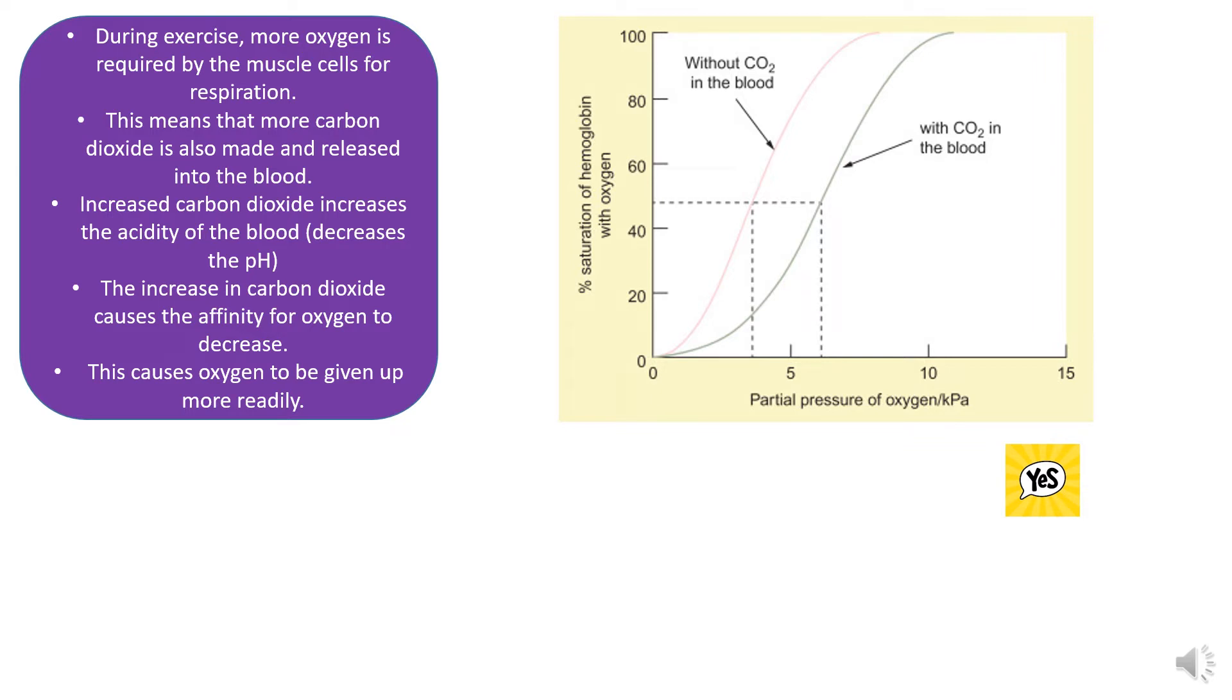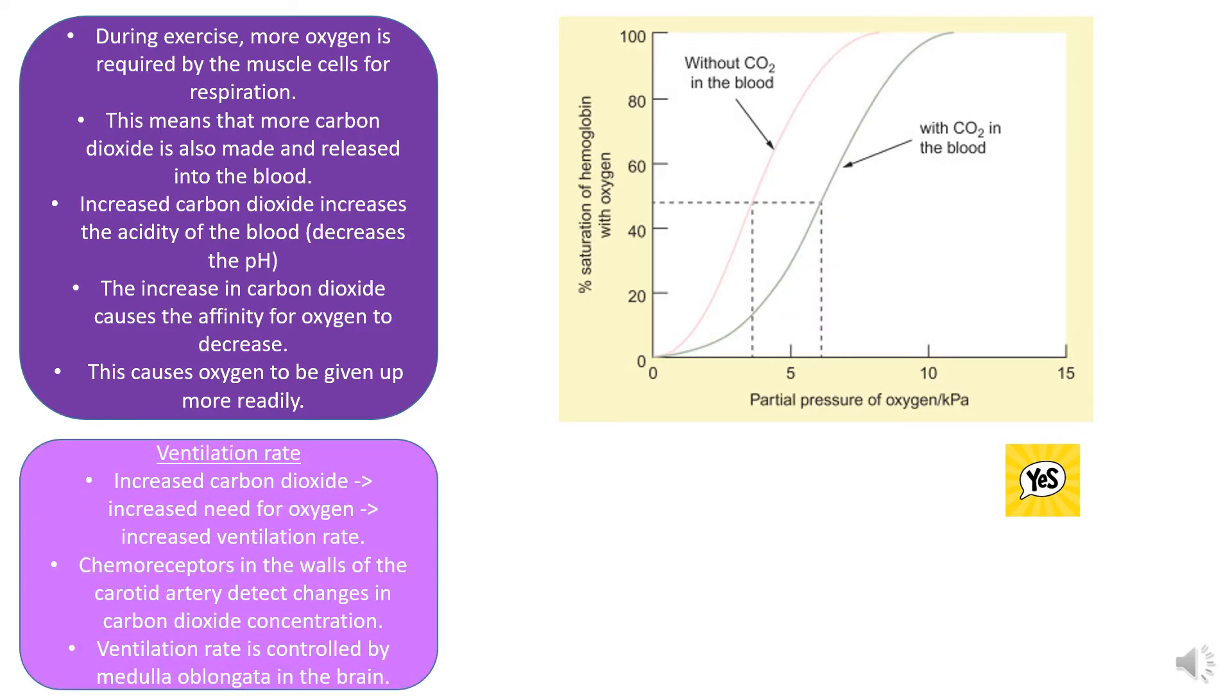If you imagine that you are a hemoglobin molecule in the lungs, there's a nice high affinity for oxygen because there's lots of oxygen. When the hemoglobin molecule gets to the muscle tissue, it recognizes that there's lots of carbon dioxide in the environment. If there's lots of carbon dioxide, the hemoglobin molecule thinks there must be lots of respiration occurring, therefore the cells must need more oxygen. So the affinity for oxygen decreases in areas where there's a lot of carbon dioxide. This can be shown on the graph as the curve shifting to the right, and we call this the Bohr shift, spelled B-O-H-R.